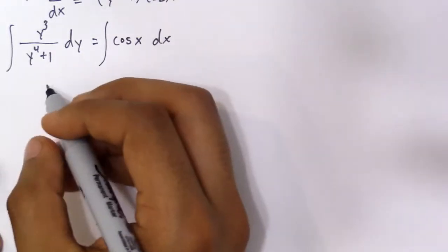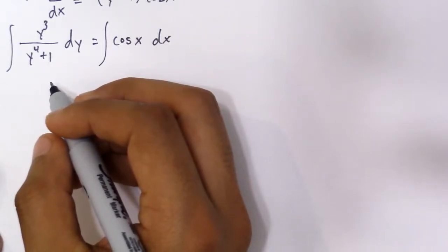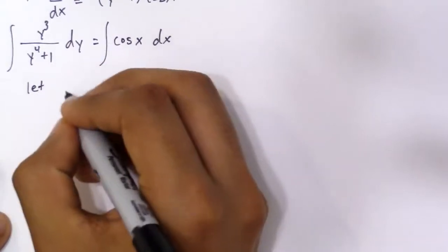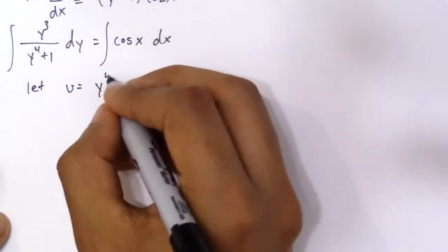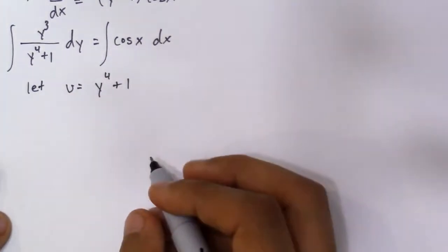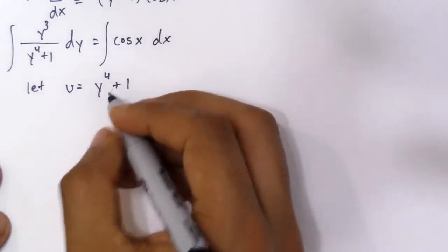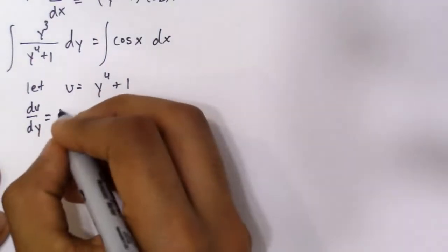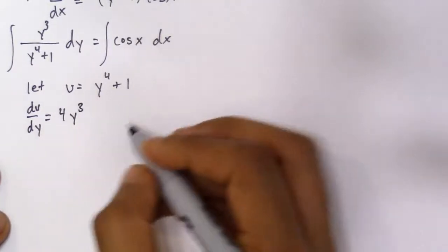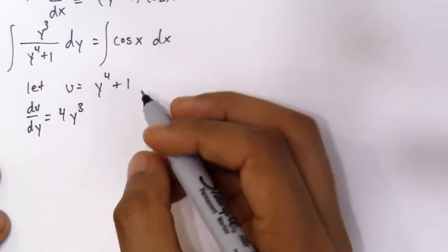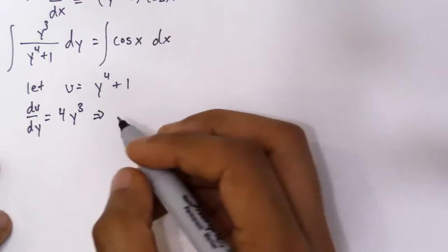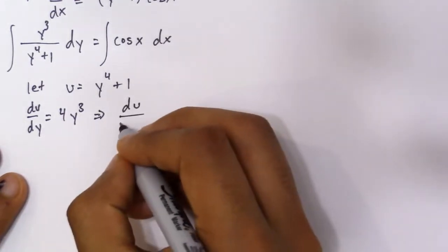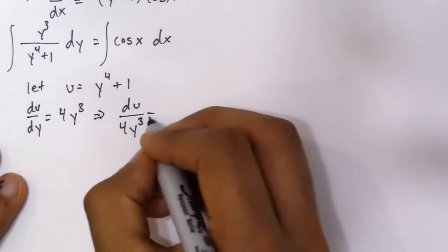So this one, we have to do some u substitution. Let u equal y⁴+1. The derivative of u with respect to y is 4y³. Now I'm going to rearrange this so I can solve for dy. So du divided by 4y³ equals dy.